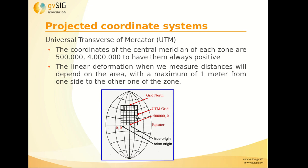Here we can see the UTM coordinates. The center of the meridian has a coordinate of 500,000, so we have less than 500,000 to the west and more than 500,000 to the east — there are no negative coordinates. The same applies to latitude: the equator is at 4,000,000, so we have more than 4,000,000 to the north and less than 4,000,000 to the south, but no negative coordinates. This is the same for all 60 zones that the Earth is divided into.